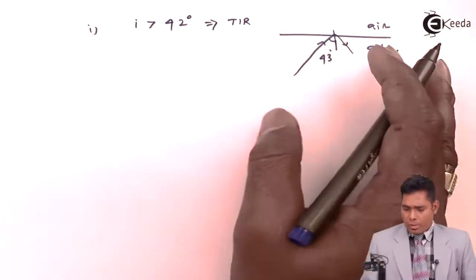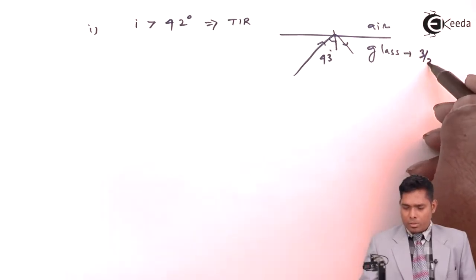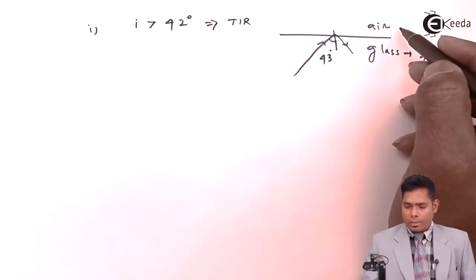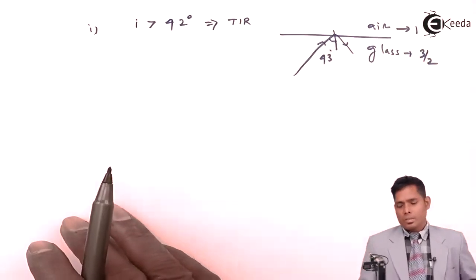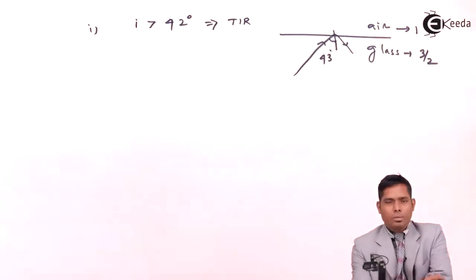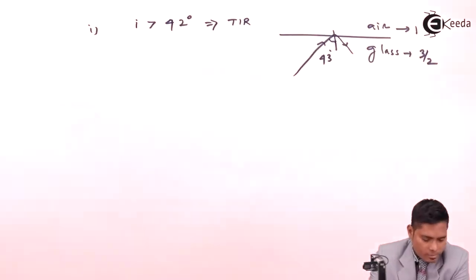The first condition for TIR is already met: light is moving from glass (denser) to air (rarer). The refractive index of glass is 3/2 and the absolute refractive index of air is 1.